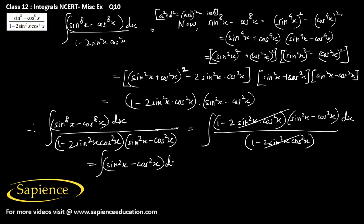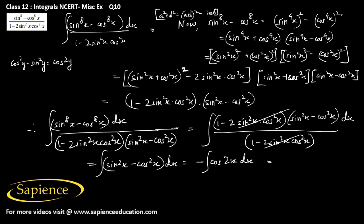This reduces to the integral of (sin²x - cos²x) dx. Since cos²y - sin²y = cos 2y, we have sin²x - cos²x = -cos 2x. Therefore the integral equals -cos 2x dx = -sin 2x / 2 + C. This is the final answer.